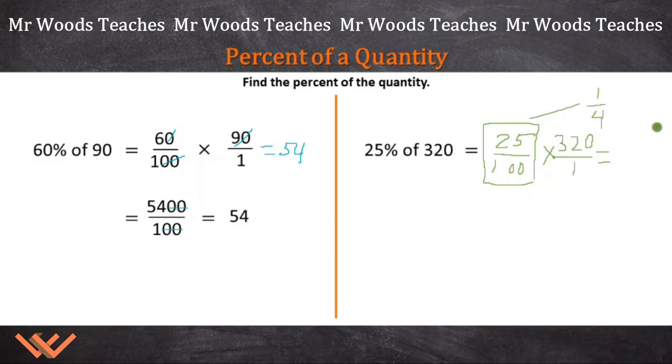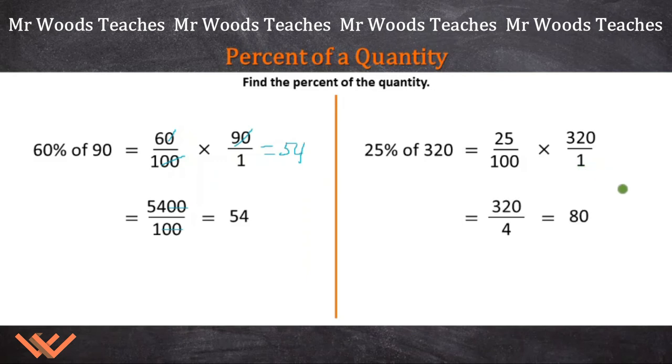Now how would you rewrite this problem? Would you rewrite it as 25 over 100 times 320 over 1 like I had before, or would you do something different? With my knowledge of math, I know that this is 1 fourth. So it's going to be 320 times 1 over 4 times 1.